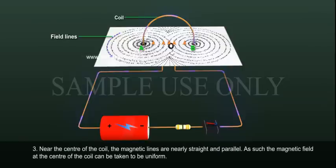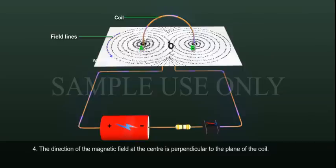Near the center of the coil, the magnetic lines are nearly straight and parallel. As such, the magnetic field at the center of the coil can be taken to be uniform. The direction of the magnetic field at the center is perpendicular to the plane of the coil.